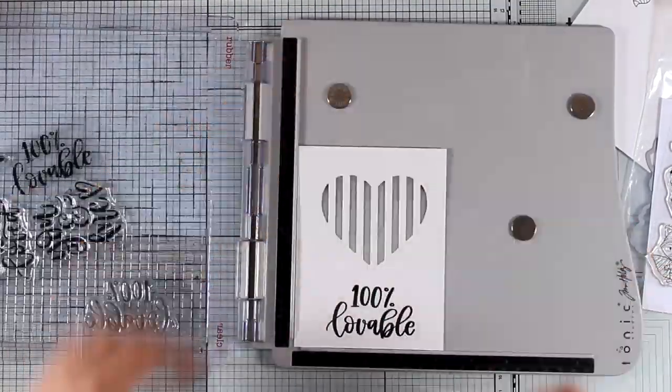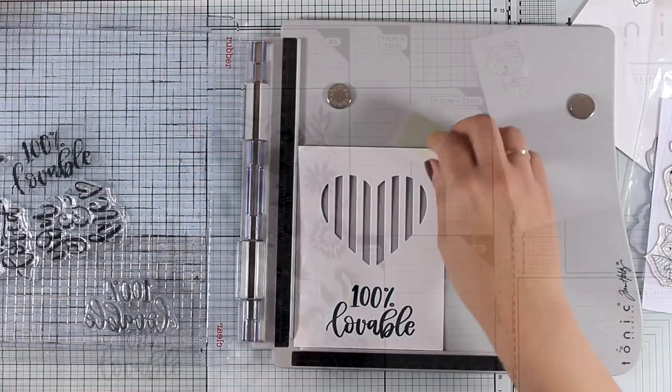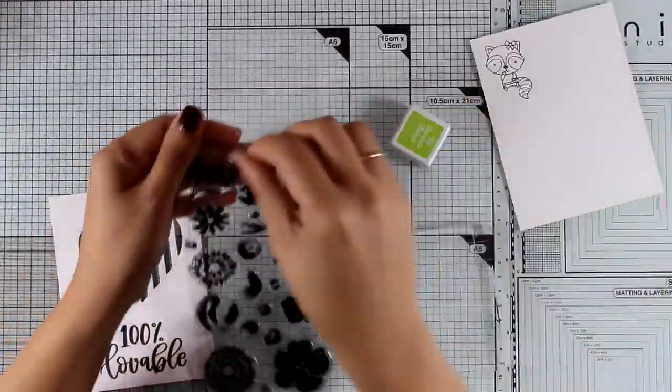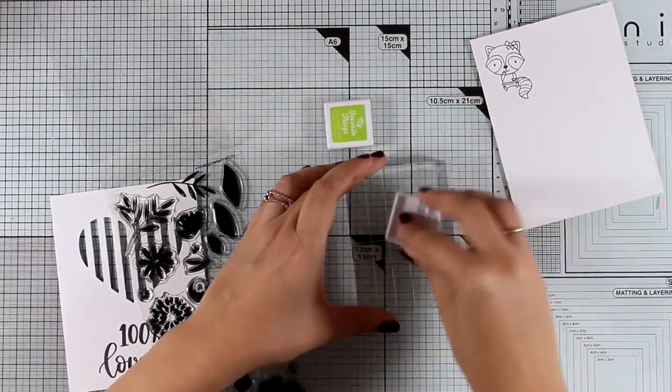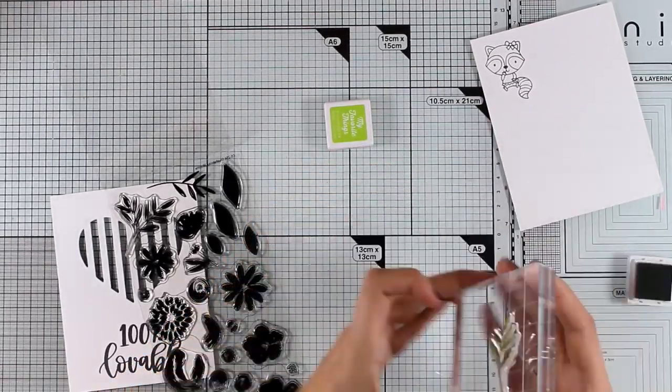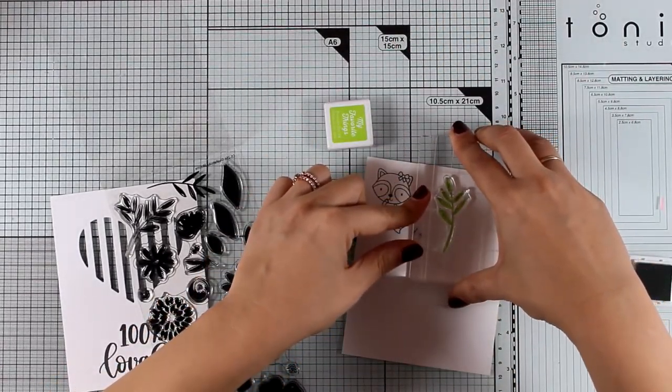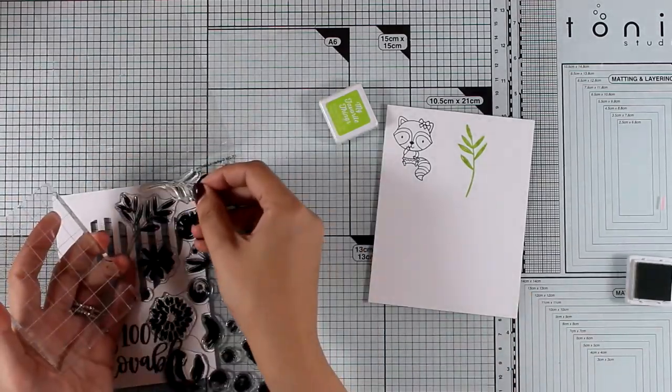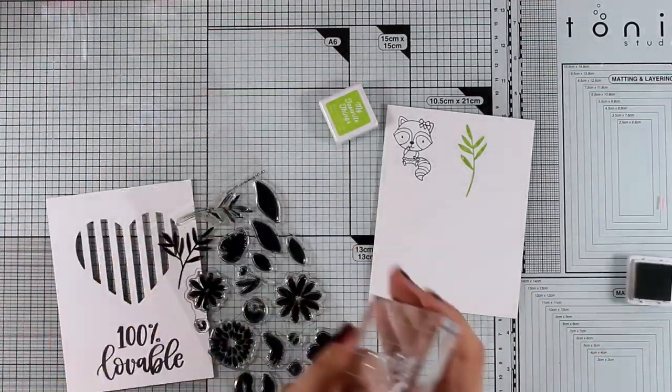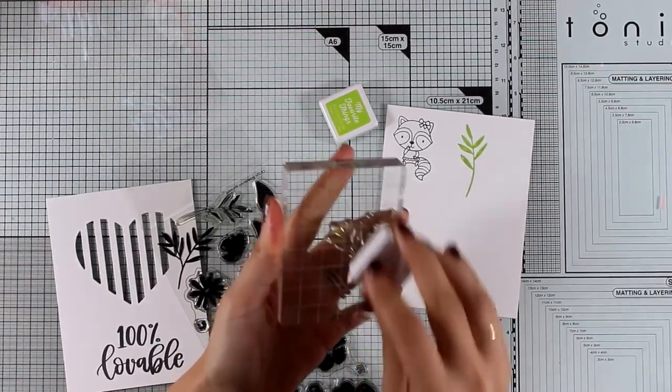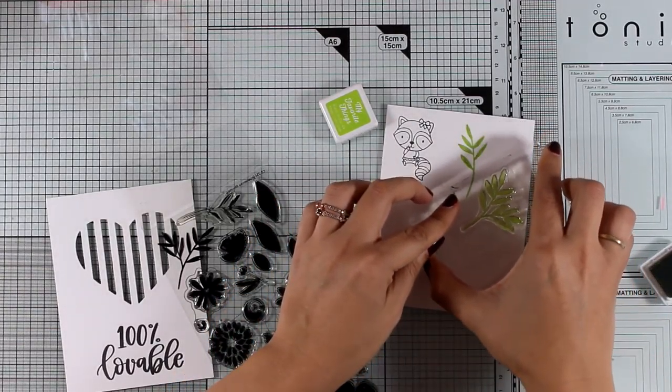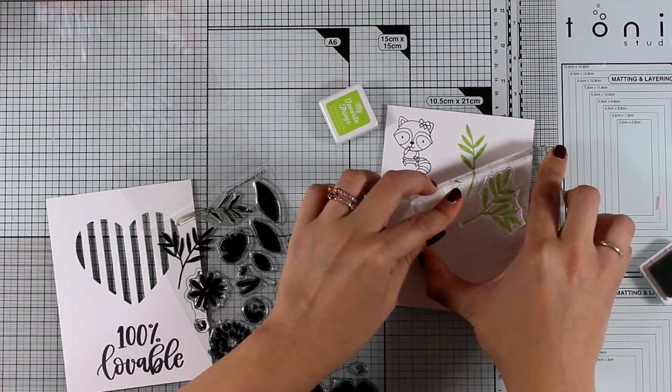Now I grab the Brushstroke Bloom stamp set that has just been released and I'm going to use some of the leaves. I'm stamping them with green ink and I'm going to switch to the second branch with leaves. The idea here is to create little elements that I can cut out and they will go on top of my card to create a lovely cluster.